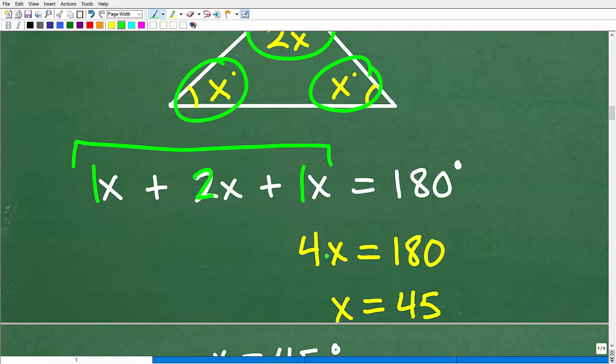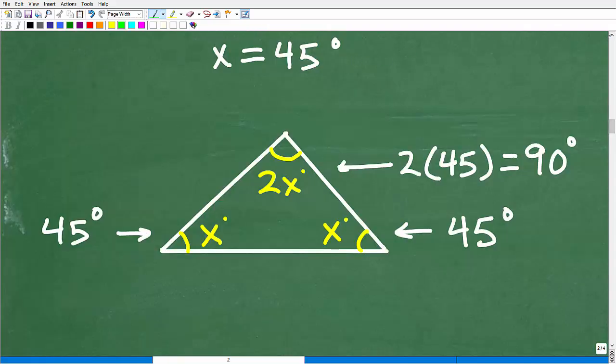So the objective is to solve for x. So all I have to do is divide both sides of the equation by four. So 180 divided by four is 45. All right. So x is equal to 45, but we're not done yet, right? So what does that mean? Well, now that we know that x is equal to 45, x is equal to 45 degrees.